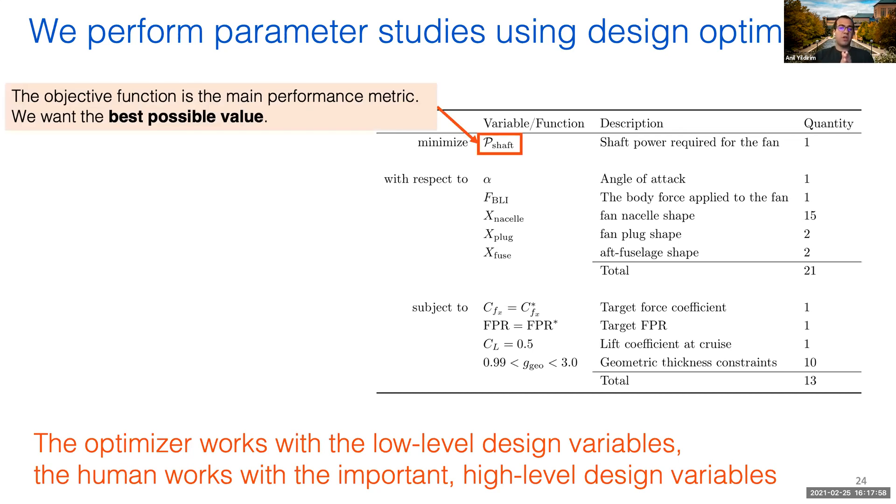The objective function represents the performance of the design, and we want the best possible value here. For example, no matter how I divide up my design problem—if I'm looking at the aft propulsor only or the whole system—I will always want to minimize the power consumption.